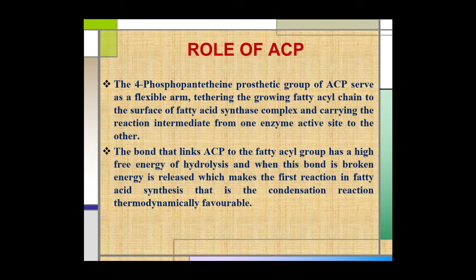Role of ACP. The 4-phosphopantetheine prosthetic group of ACP serves as a flexible arm, tethering the growing fatty acyl chain to the surface of the fatty acid synthase complex and carrying the reaction intermediates from one enzyme active site to another. The bond that links ACP to the fatty acyl group has a high free energy of hydrolysis, and when this bond is broken, a large amount of energy is released, which makes the first reaction in fatty acid synthesis — the condensation reaction — thermodynamically favorable.